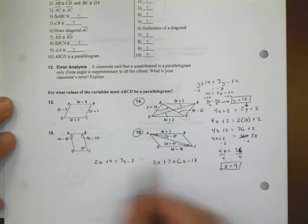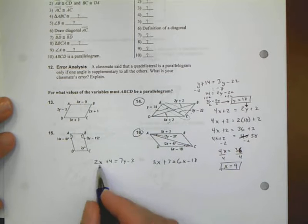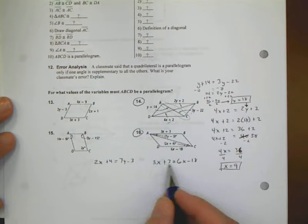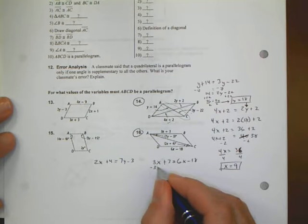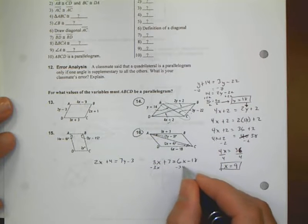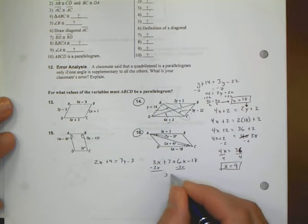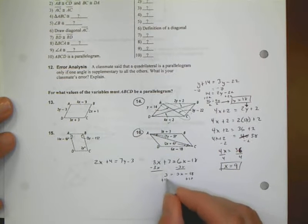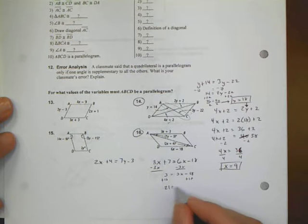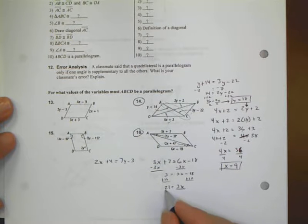Looking for the easier one to get an initial value for, I have two variables in this equation and only one variable in this equation. So I'm going to go with the one variable equation to solve for x. I'll subtract 3x from both sides to get 3 equals 3x minus 18. I'll add 18 to both sides and end up with 21 equals 3x. Divide both sides by 3, and we end up with 7 equals x.